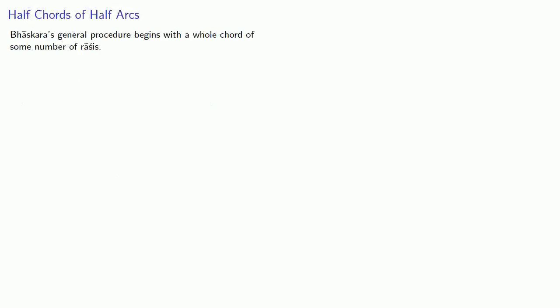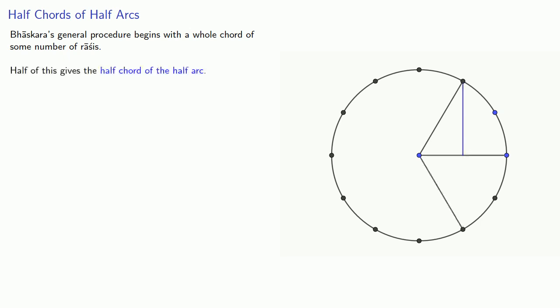And Bhaskara's general procedure begins with the whole chord of some number of racis. Half of this gives the half-chord of the half-arc. Now, it's important to remember that the half-chord of half the arc is actually half the chord of the full arc, and importantly, not a chord.